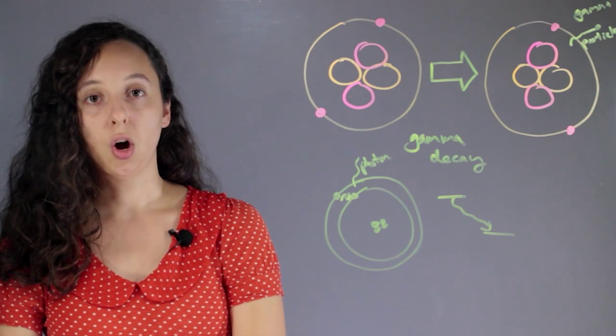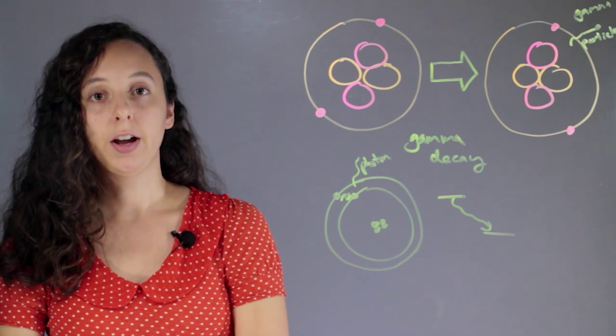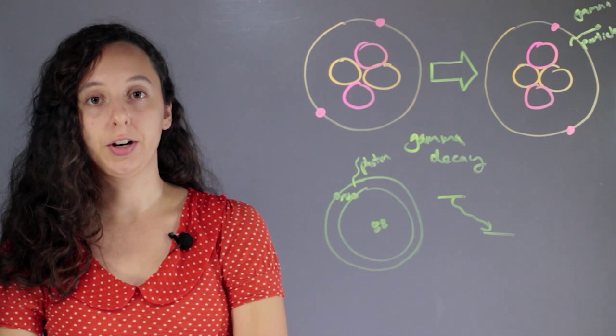Alright, I'm Robin Higgins and this is what happens to the atomic number of a nucleus when it undergoes gamma decay.